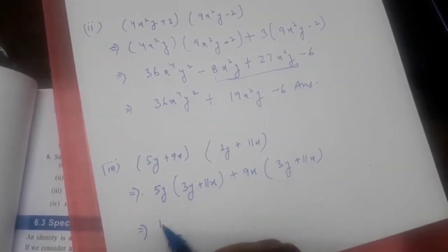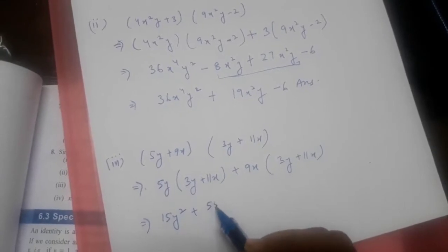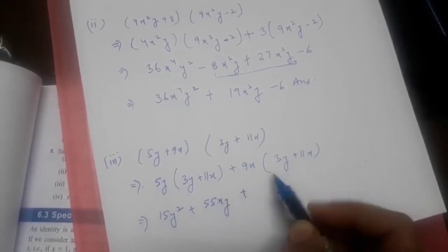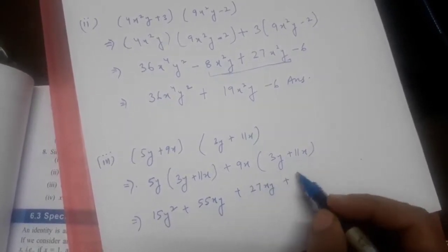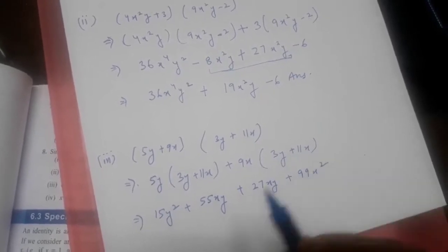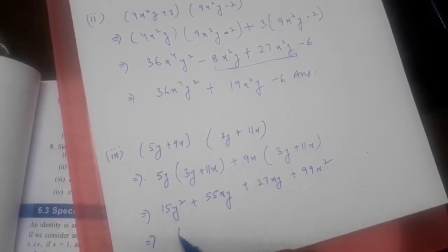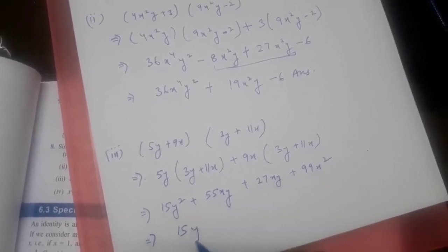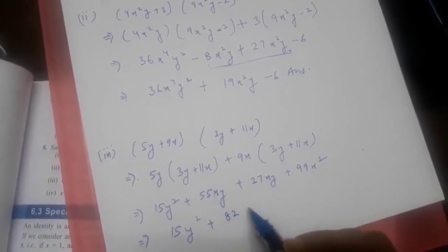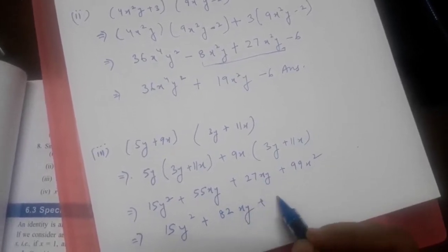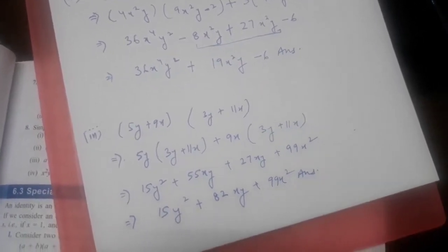In our next step: 5 × 3 = 15y². The like terms here are 55xy and 27xy, so we will add these like terms. So 15y² + (55 + 27)xy + 99x² gives us 15y² + 82xy + 99x². This is our answer for the third part. Hope this is clear.